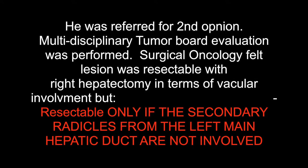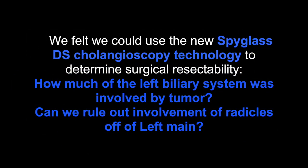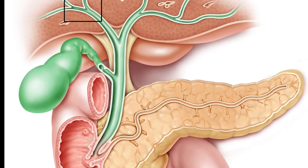We reviewed the case at Multidisciplinary Tumor Board, and surgical oncology felt the lesion was resectable with right hepatectomy in terms of vascular involvement. But there was a question about resectability — this would only be a resectable lesion if the secondary radicals from the left main hepatic duct were not involved, in order to spare the left side of the liver. The question was posed: could we use SpyGlass cholangioscopy technology to determine surgical resectability and rule out involvement of the secondary radicals on the left side of the liver?